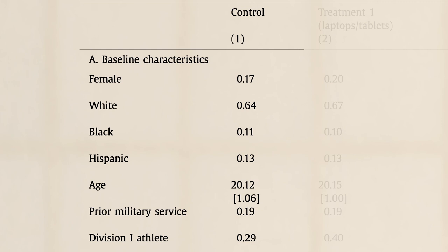For example, we see the control group has an average age a bit over 20. Many of these covariates are dummy variables. A dummy variable can only have two values, a 0 or a 1.